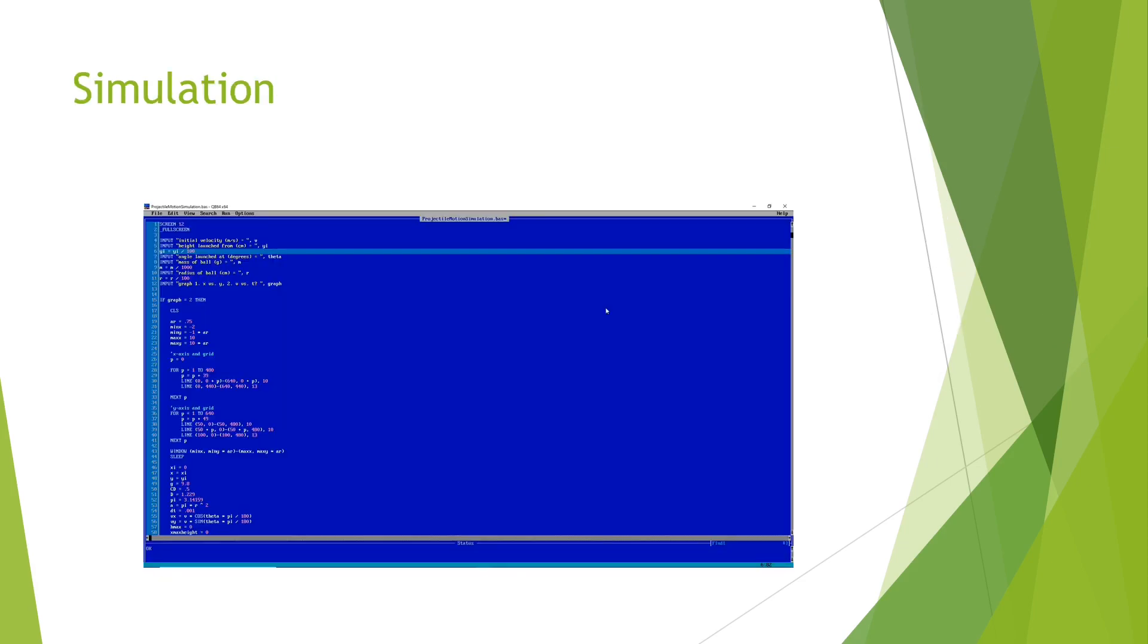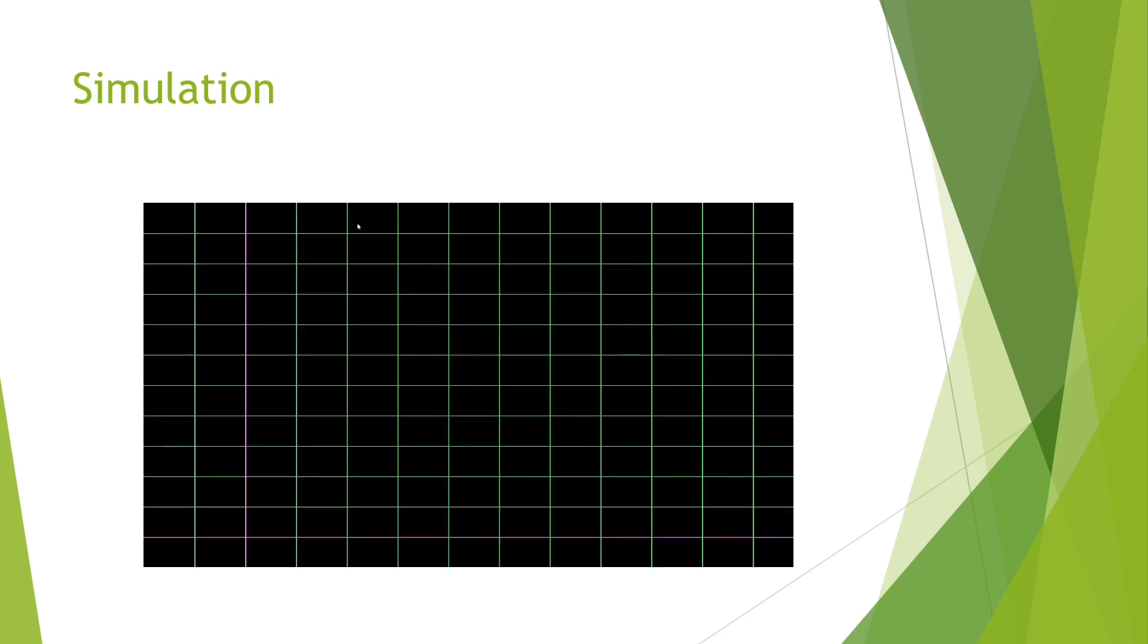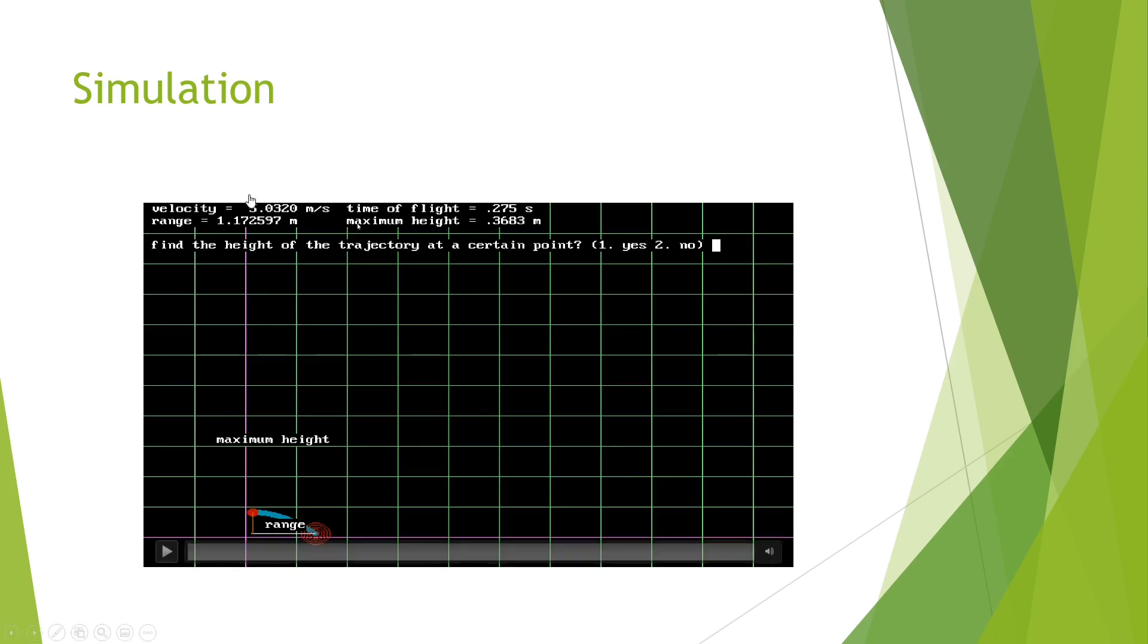Here you can see a simulation of my computer program. The velocity we found before is 4.27 meters per second. The height launched from was the height of the lever arm which was 36.83 centimeters. The mass of the ball was about 40 grams and the radius of the ball was about one centimeter. You can see that the range ends up being 1.172597 meters which isn't too far off from our original.